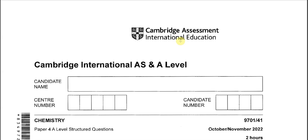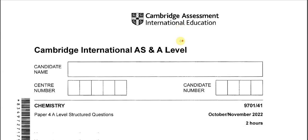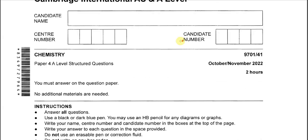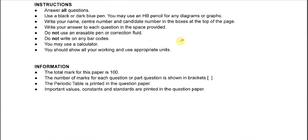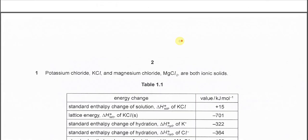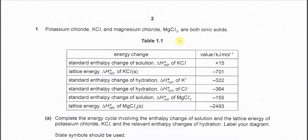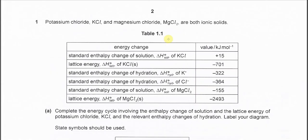October-November 2022, Paper 4, Variant 1. Question 1 involves potassium chloride and magnesium chloride — they are both ionic solids. Table 1.1 provides all the enthalpy data we're going to use for the coming calculations.